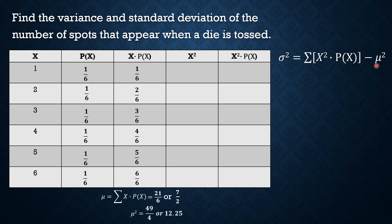Since our formula has mu squared, we need to get the square of our mean — we square the mean because it is part of our formula for the variance. So mu squared is equal to 49/4 or 12.25. Now let's complete the table by supplying the missing elements. For the x squared column, we square our values 1 through 6: 1²=1, 2²=4, 3²=9, 4²=16, 5²=25, and 6²=36.